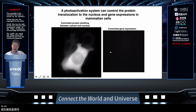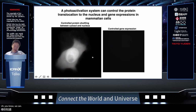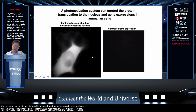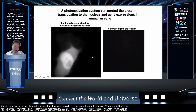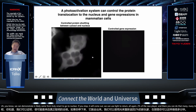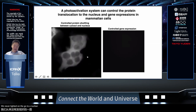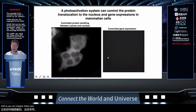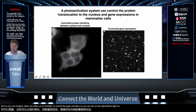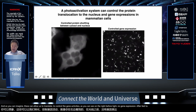We demonstrated this technology works: we can use light to drive the molecule into the nucleus, and when light is stopped, it comes out. We can use light to push it back in many times — whenever light is on, the complex accesses the genome to control gene expression. Before light, there is no gene expression; after light, we can see clear expression. This allows us to control gene activity in a light-dependent manner.